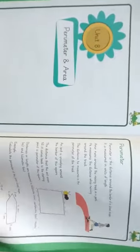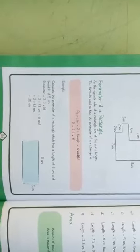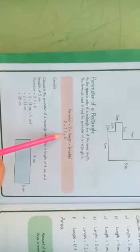The formula of perimeter of rectangle is two times length plus breadth. When length and breadth of a rectangle is given, you will put the value of length and breadth in this formula and find its perimeter.